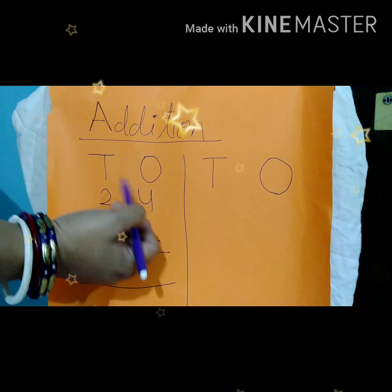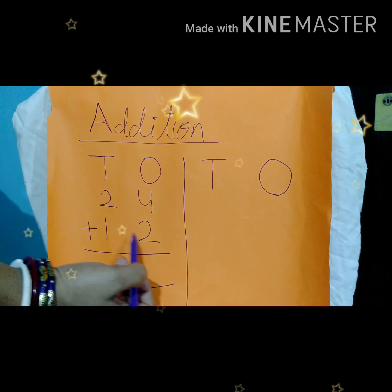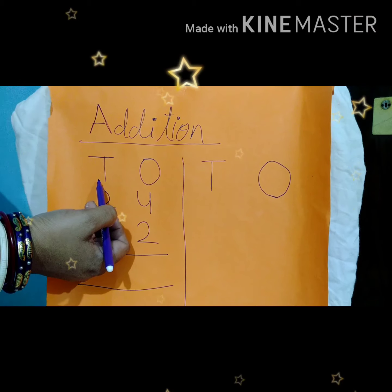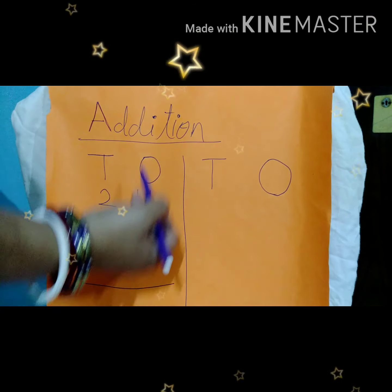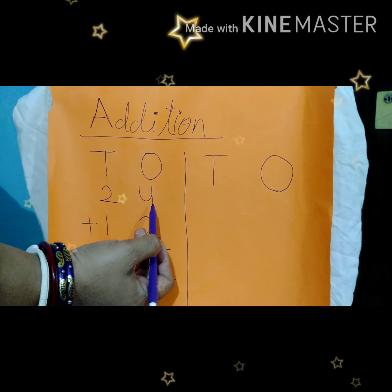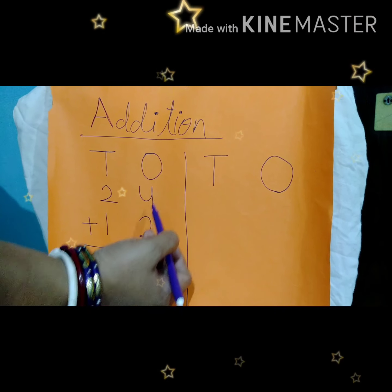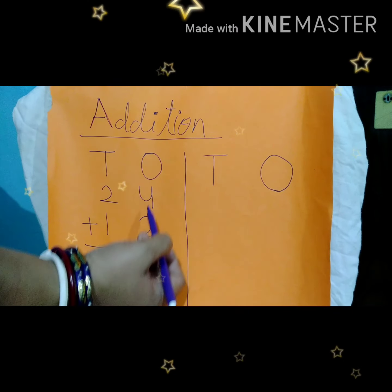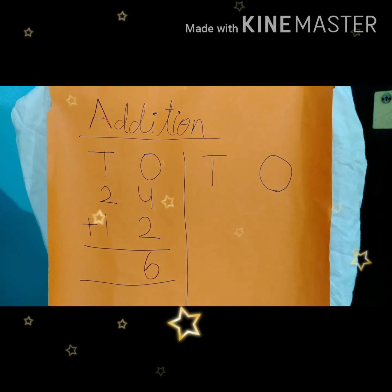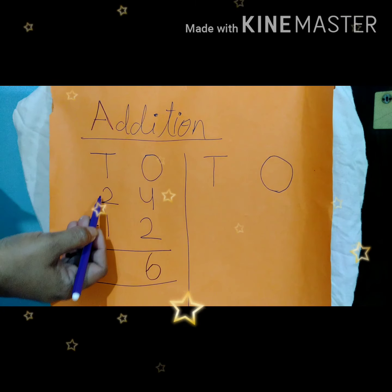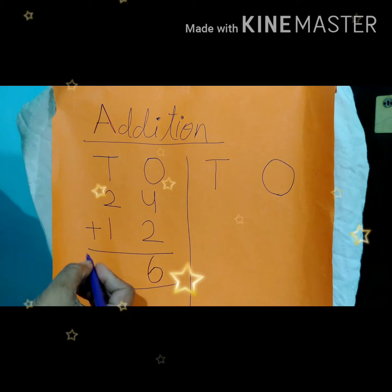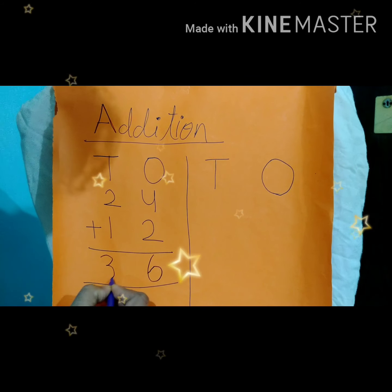Now here we have 24 plus 12. You can see here this is the 1's place and this is the 10's place. So how do we add? Always start from 1's place. In 1's place we have 4 and 2. So 4 plus 2 is equal to 6. We will write 6 here below 1's place. Now in 10's place we have 2 plus 1. 2 plus 1 is 3, so we will write 3 here.